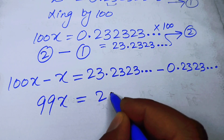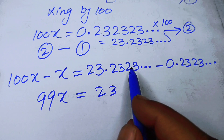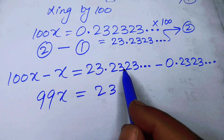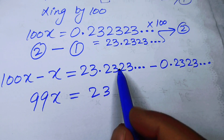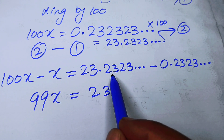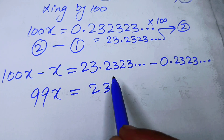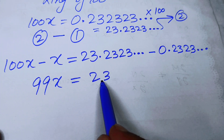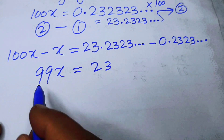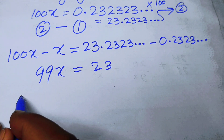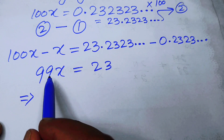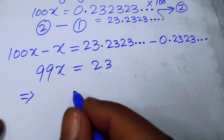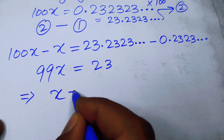The decimal parts cancel, leaving only the integral part 23. So we have 99x = 23. Taking 99 to the right-hand side, we get x = 23/99.